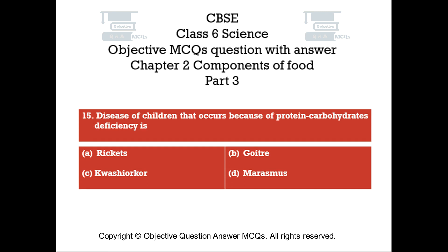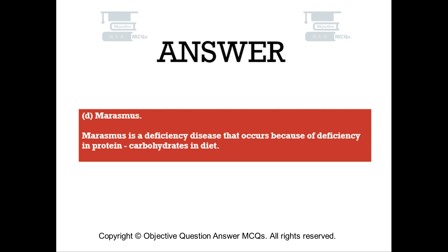Question number 15: Disease of children that occurs because of protein and carbohydrates deficiency is. Option A: Rickets. Option B: Goitre. Option C: Kwashiorkor. Option D: Marasmus. The right answer is Option D — Marasmus. Marasmus is a deficiency disease that occurs because of deficiency in protein and carbohydrates in diet.